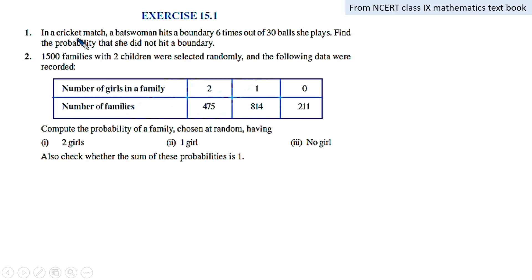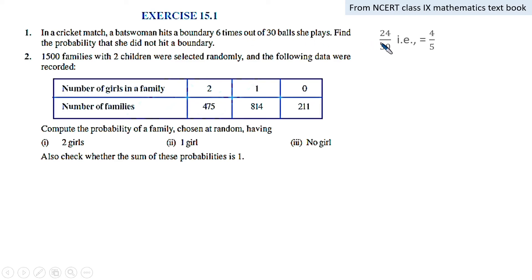First exercise: in a cricket match, a batswoman hits a boundary six times out of 30 balls she plays. Find the probability that she did not hit a boundary. She did not hit a boundary 24 times out of 30, so the probability is 24 by 30, which simplifies to 4 by 5.